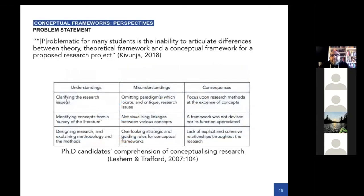If you start off with the problem statement around conceptual frameworks, a lot of the time it comes down to ambiguity about the difference between a theory, a theoretical framework, or a conceptual framework, and the work that those different concepts are doing within a piece of research. I've taken a quote from Kivunja here, but there were very similar narratives in most of the papers we looked at. Essentially it comes down to a lack of clarity, and this having consequences further down the line. You can see this in the table from Lesham and Trafford's paper — while it's not always obvious when there's an issue with a conceptual framework, it kind of comes out somewhere.